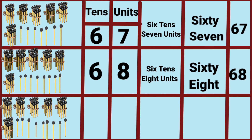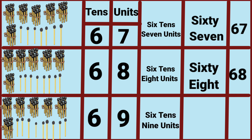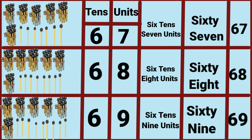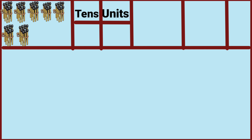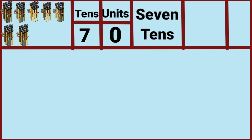Six tens, nine units. Six tens, nine units. Sixty-nine. Sixty-nine. Seven tens, zero units. Seventy. Seventy.